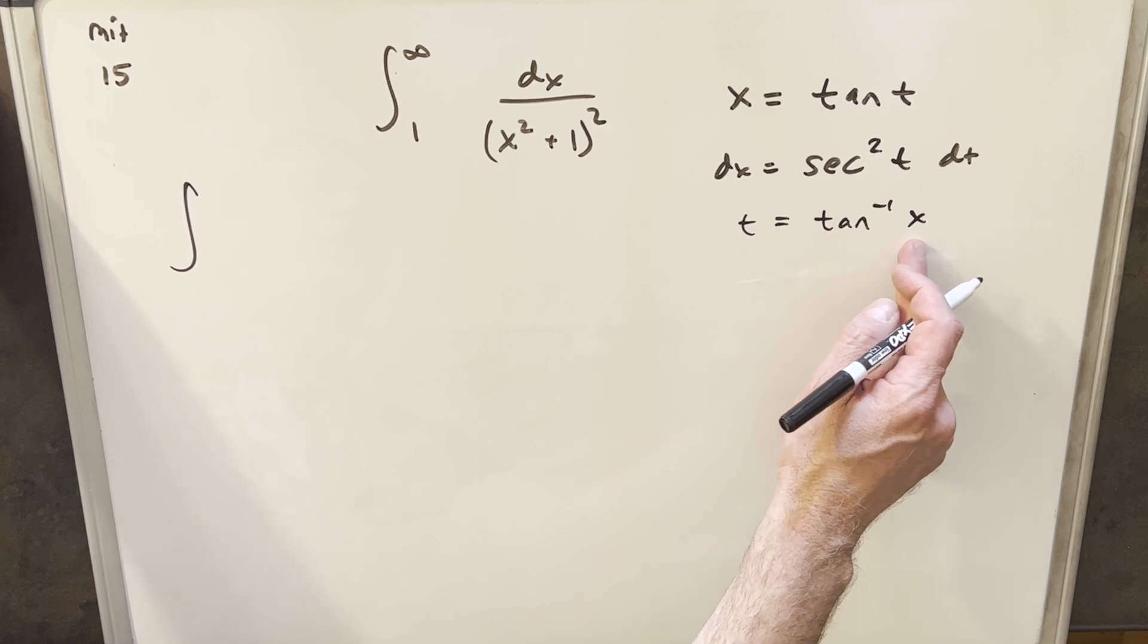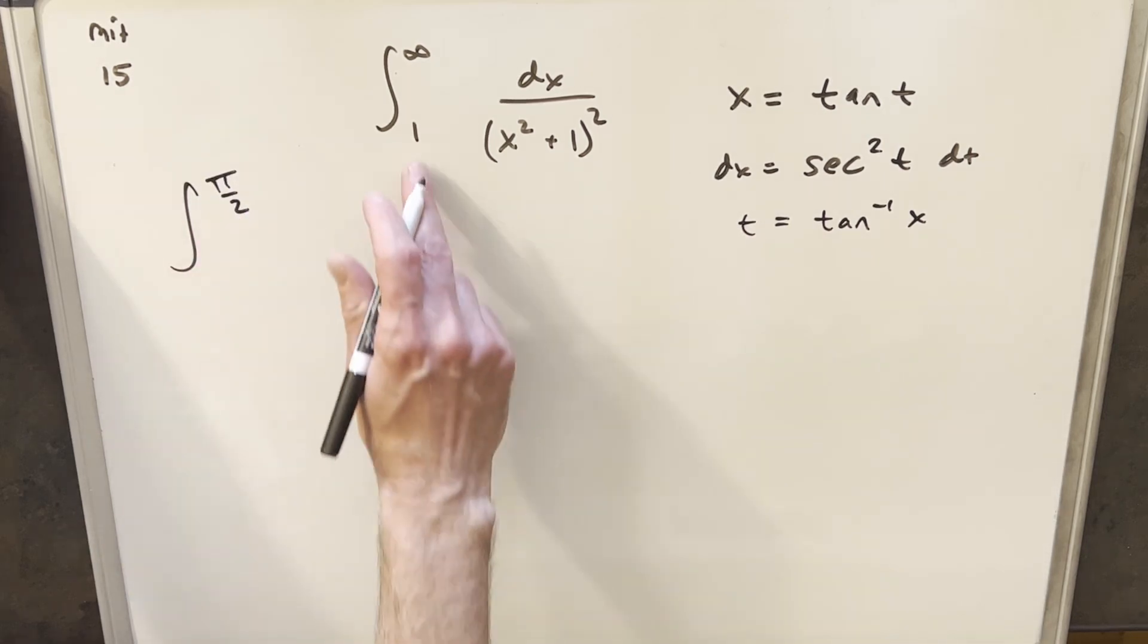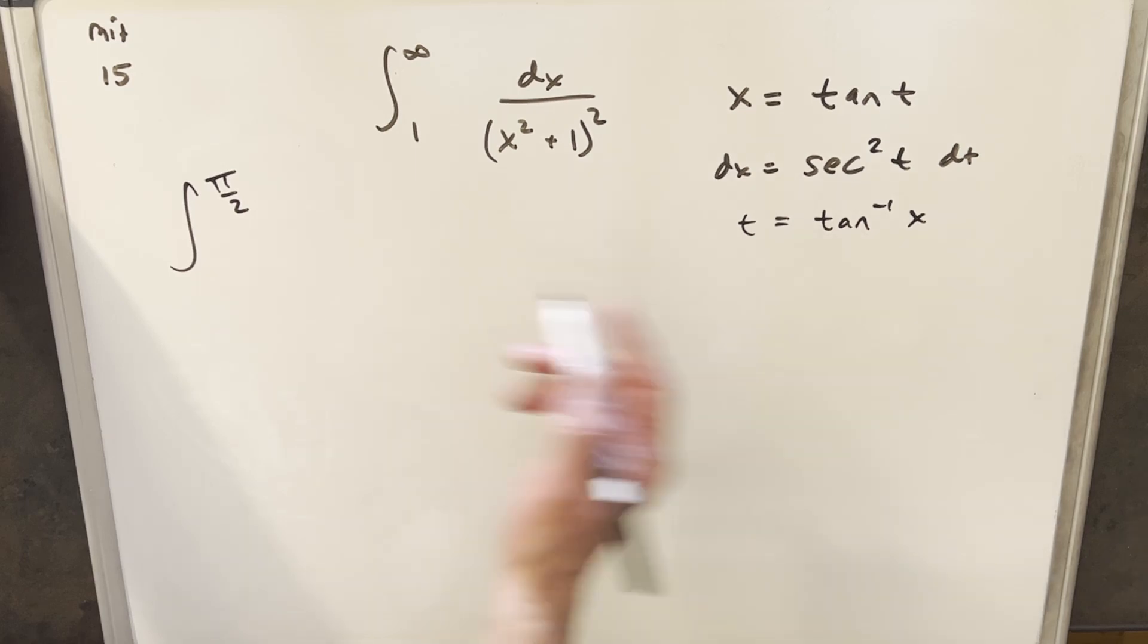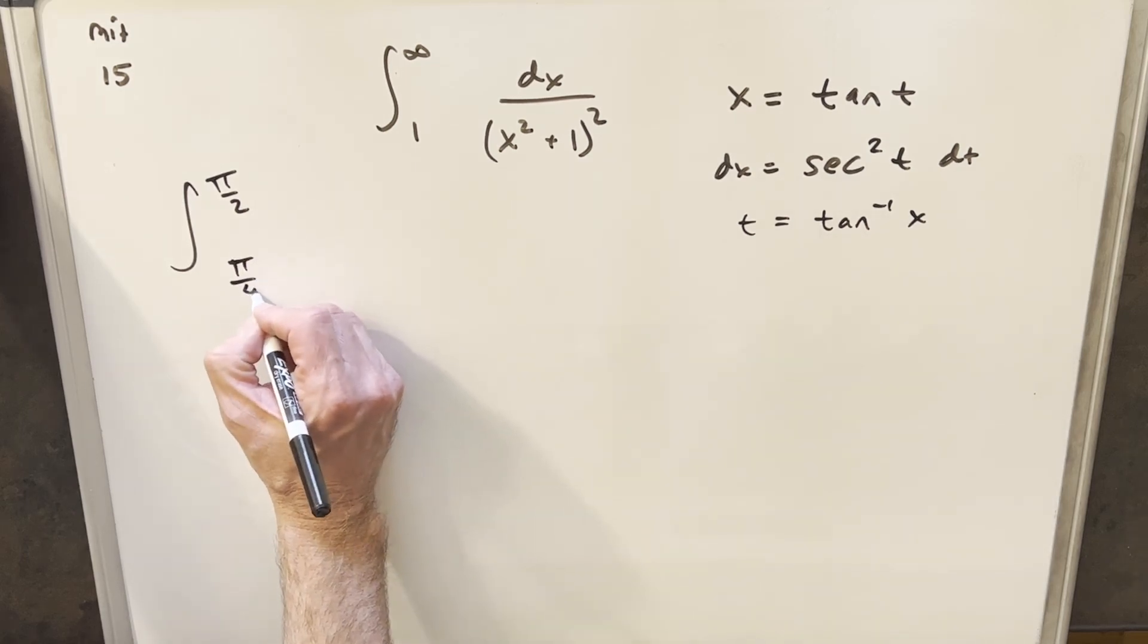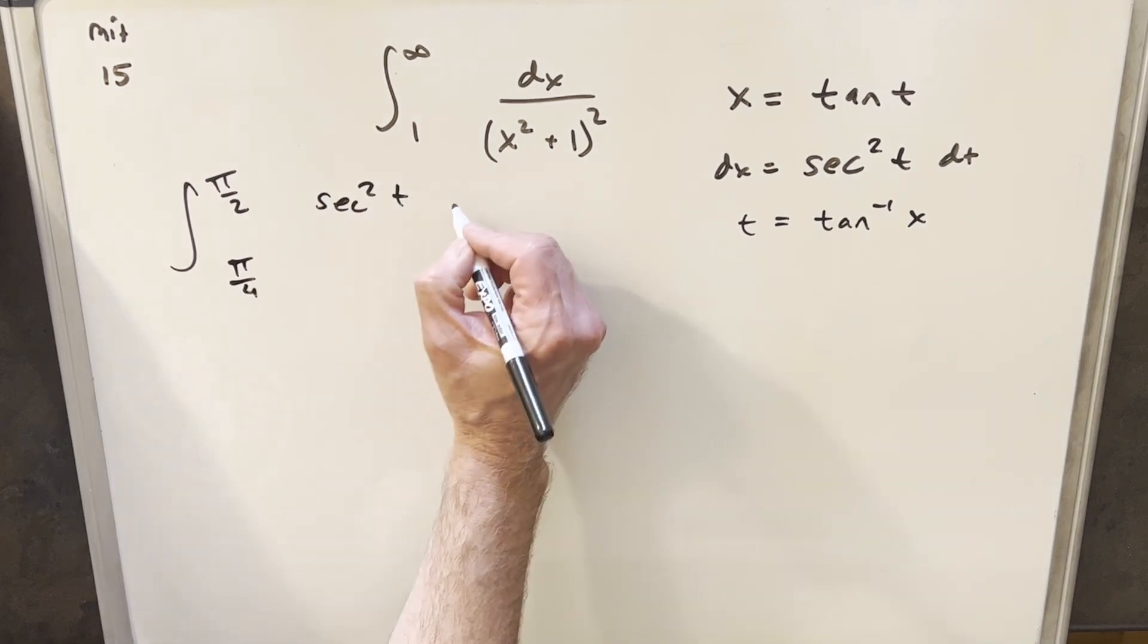Now if we look at arctan of infinity, that's going to happen when t is π/2. Arctan of 1 is going to be π/4. Then our dx is going to be sec²(t) dt.